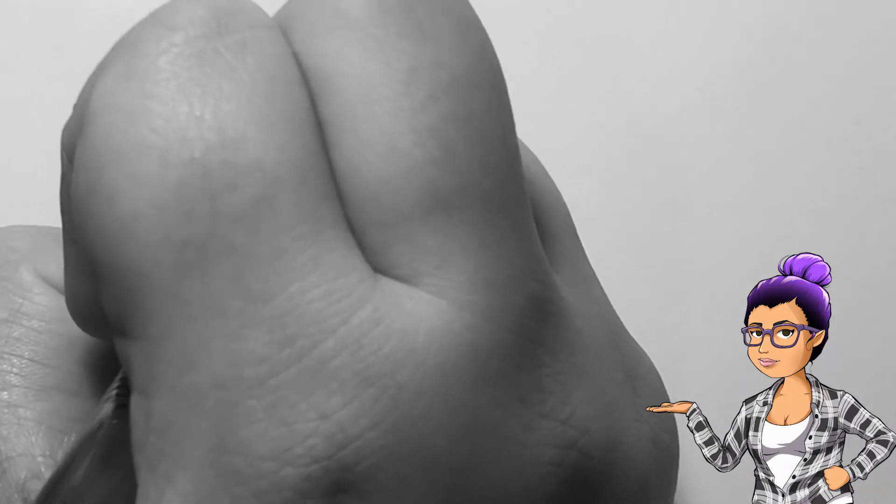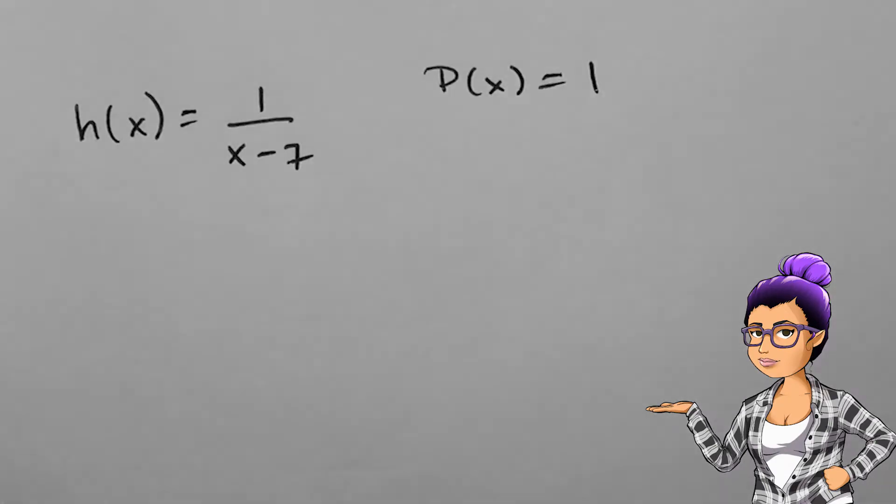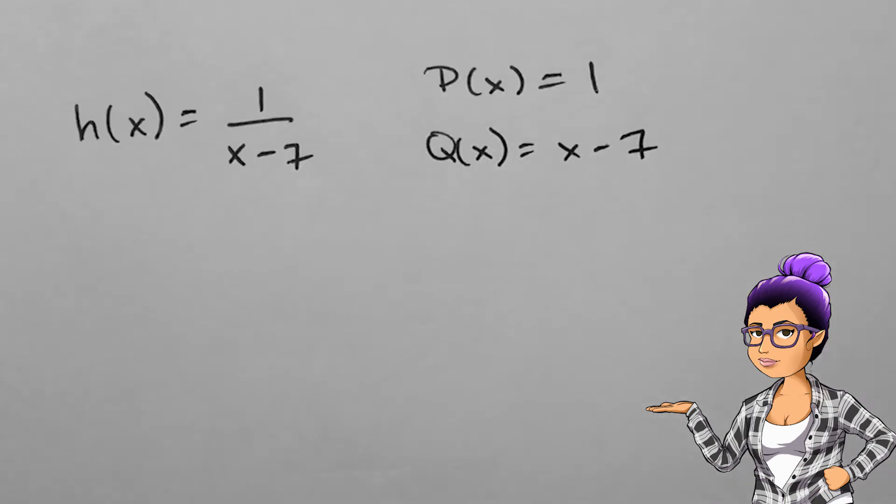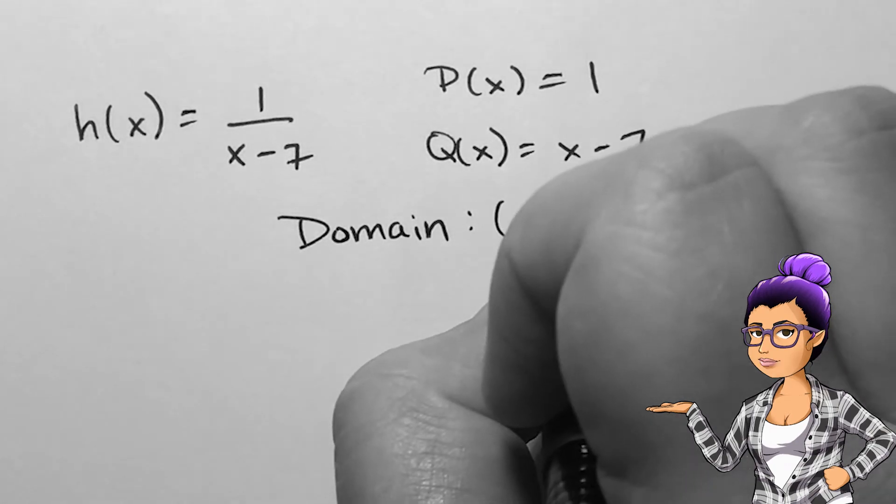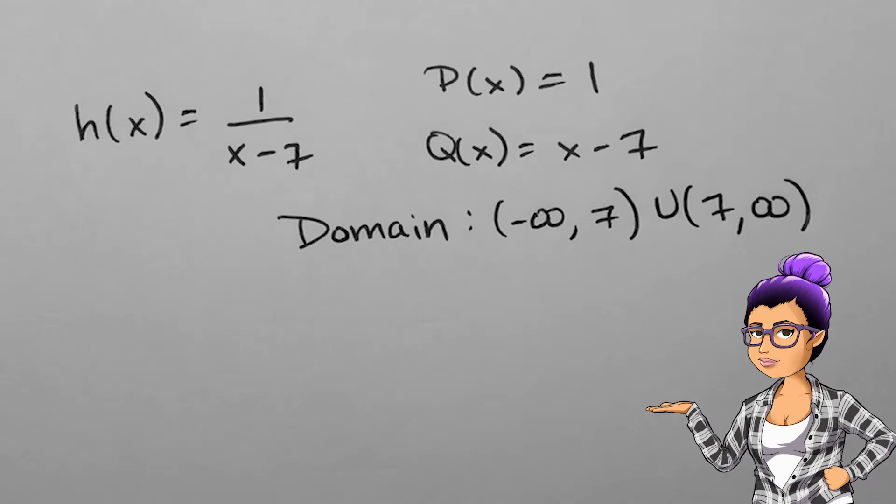If h of x is 1 over x minus 7, we have a rational with constant polynomial in the numerator and linear polynomial in the denominator. It has domain of all real numbers except 7.